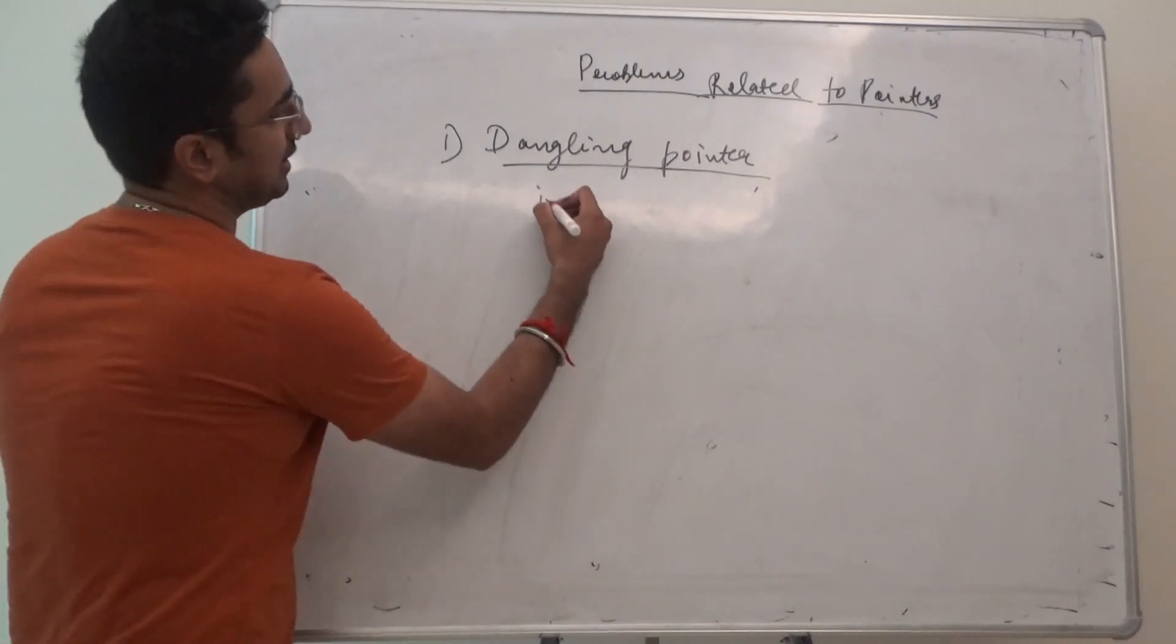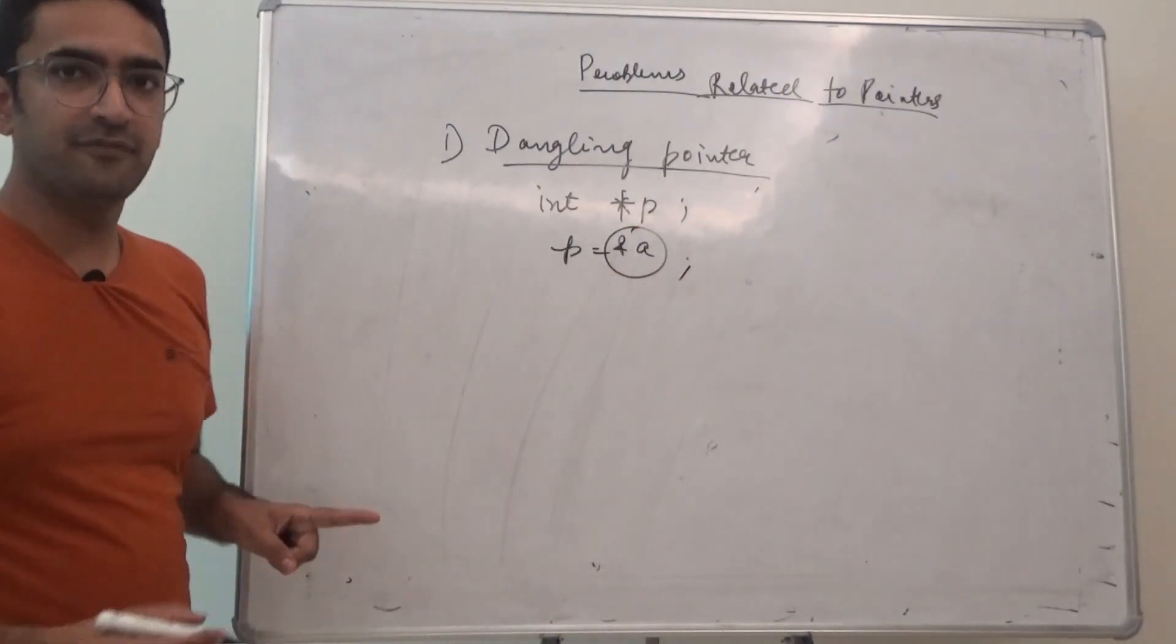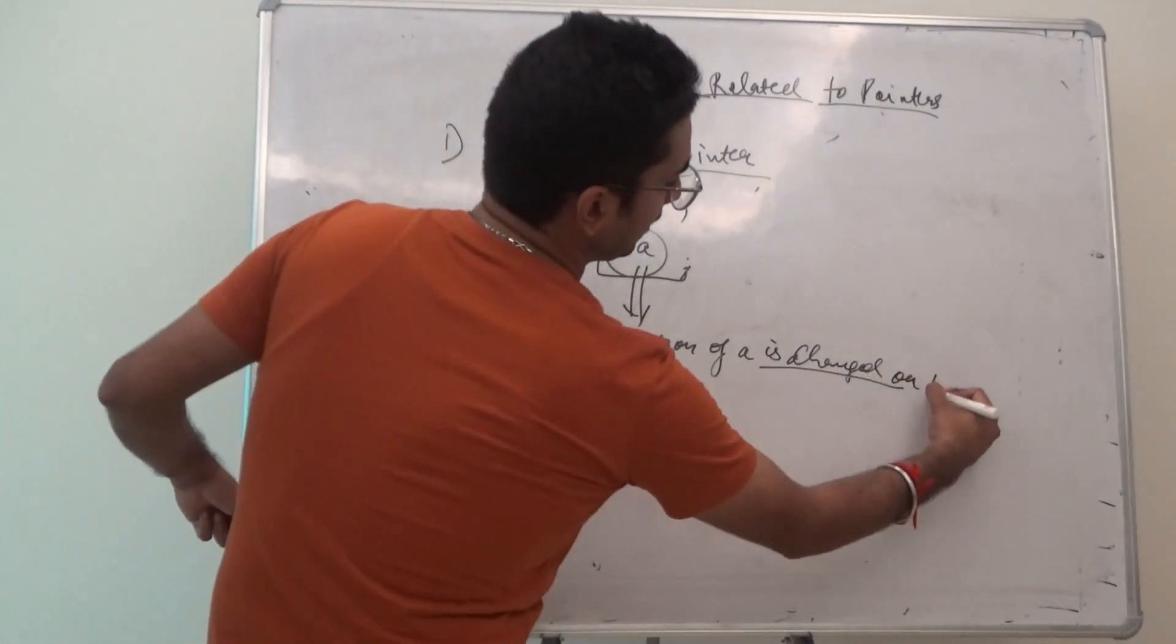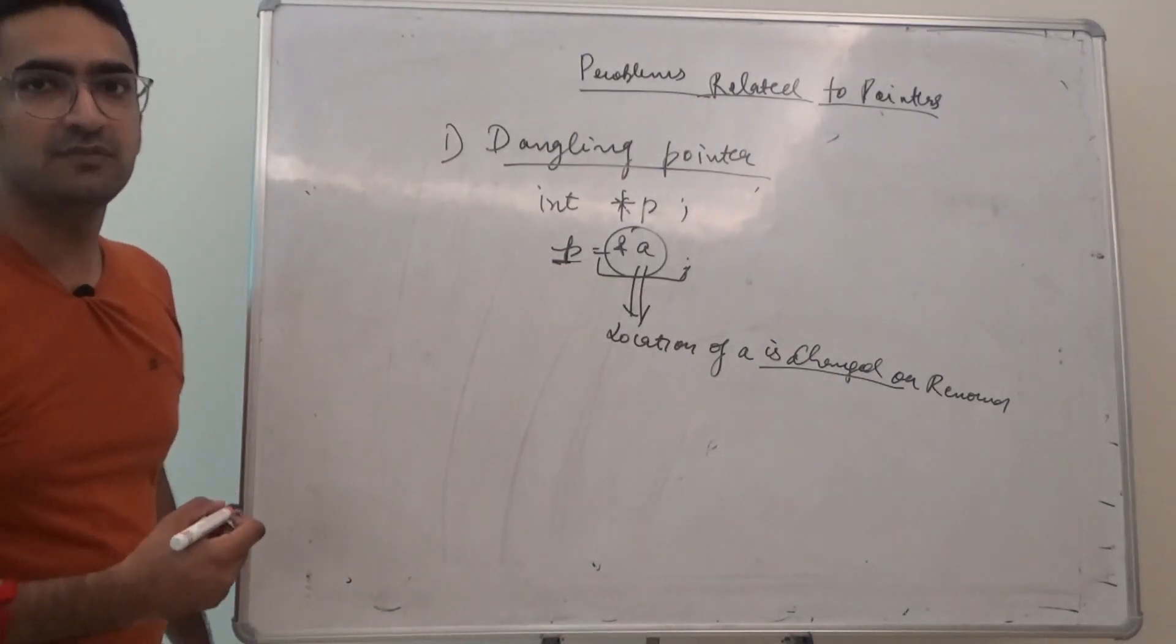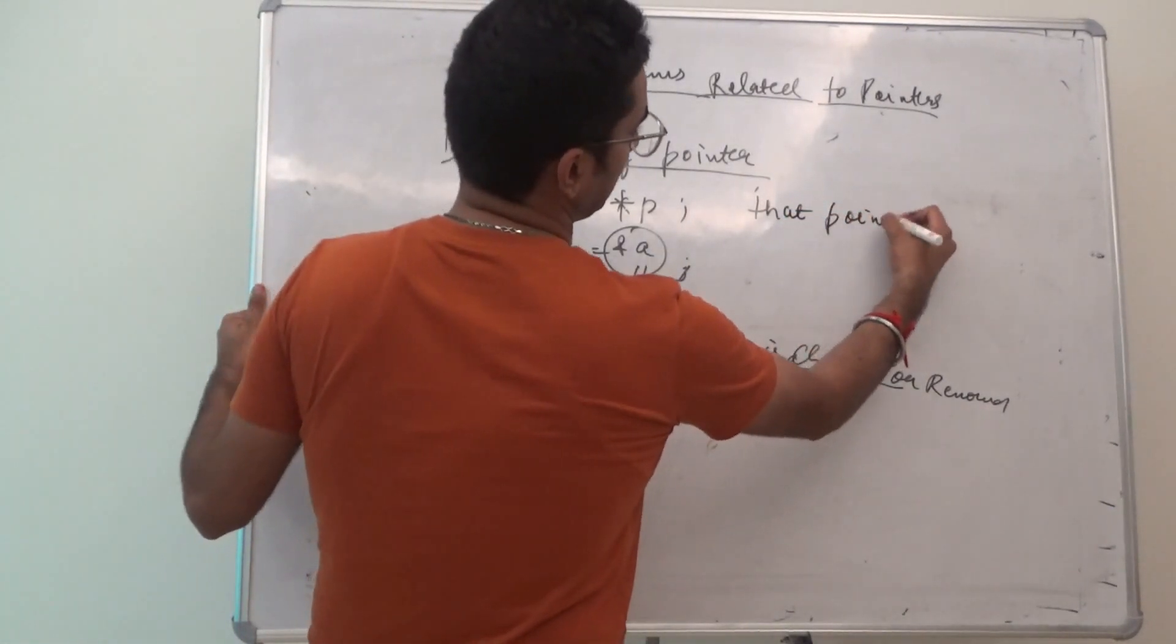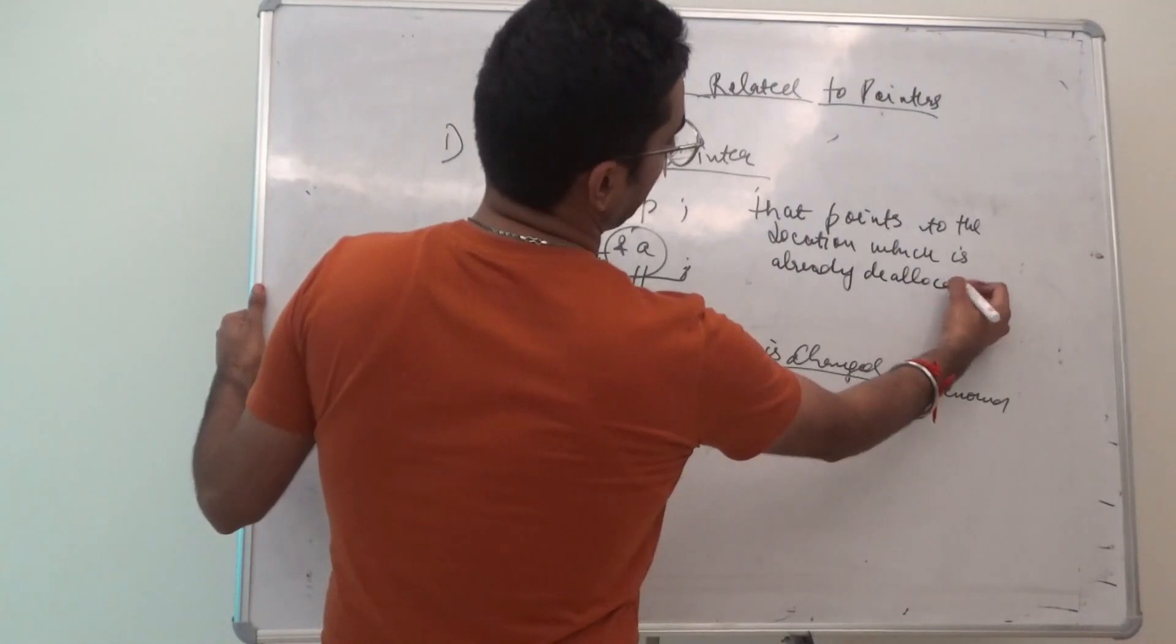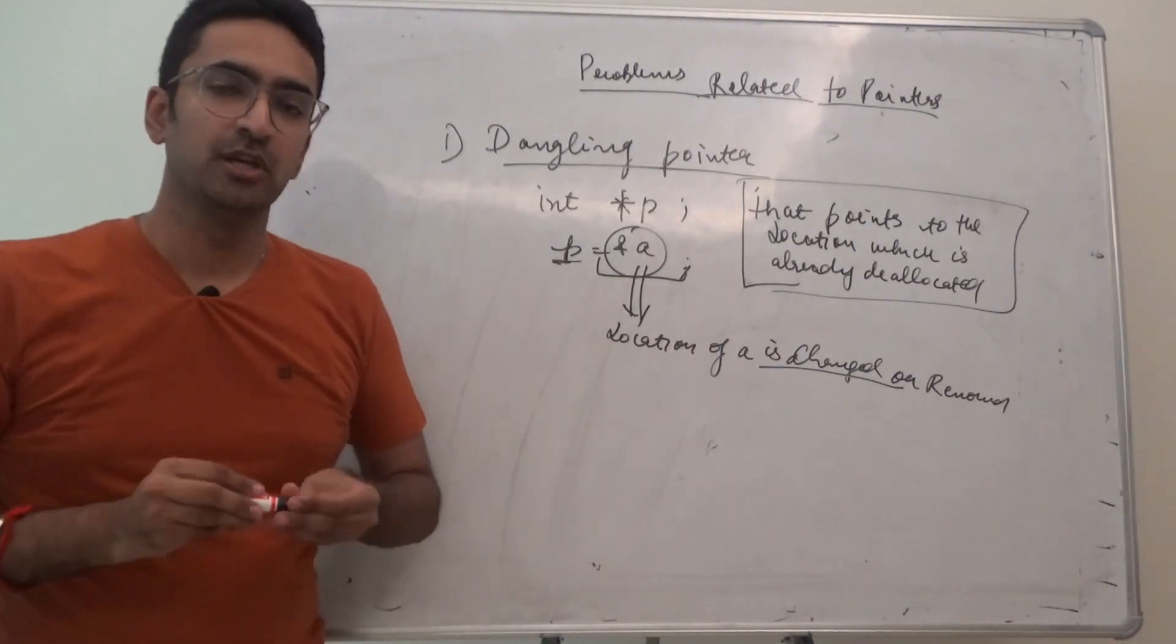For example, int star P is storing the address of A. What if the location of A is changed or removed? There is a tendency of this P to point to a location which is deallocated. A dangling pointer is a pointer that points to a location which is already deallocated.